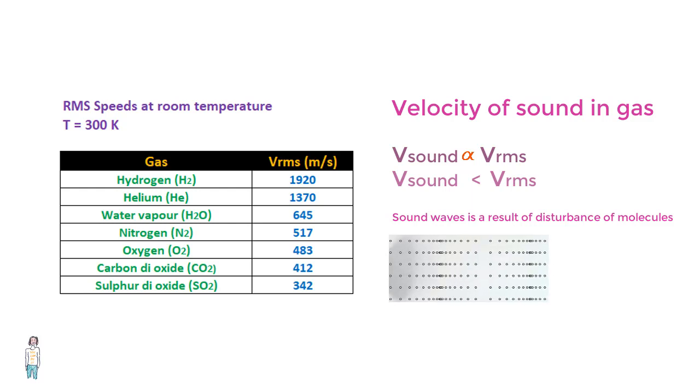Also, since not all molecules of the gas move in the same direction as the wave, the speed of the sound wave gets beaten down a little. So while the RMS speed of a nitrogen molecule is 517 meters per second, the speed of sound in nitrogen is only 350 meters per second.